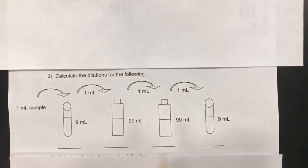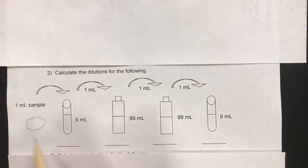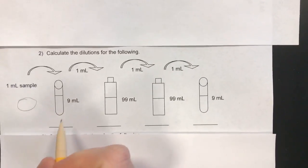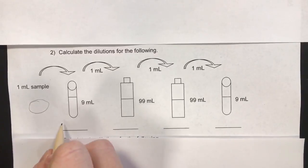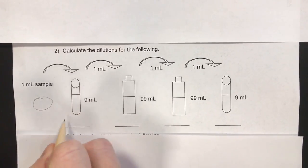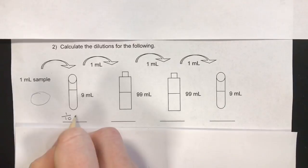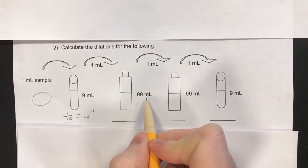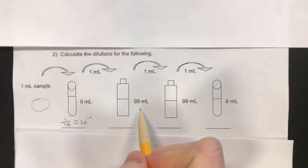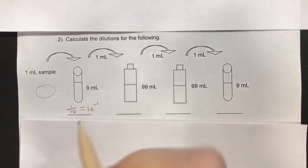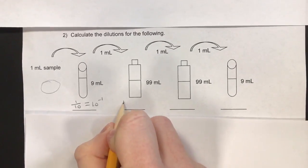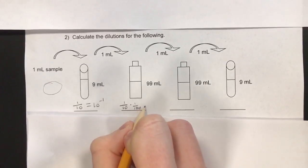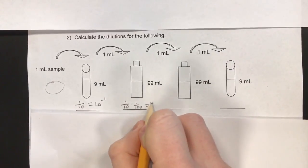Same thing with this example — you're going to have the original sample and you're going to put 1 milliliter each time into the next test tube. Just as in the first example, we're going to have 1 and 9 equaling 10, so it's going to be 1 over 10, which equals 10 to the negative 1. For the next one we're going to have 99, so it's 1 plus 99 equaling 100. Don't forget to put the original dilution from the first one in there as well — so 1 over 10 times 1 over 100 equals 10 to the negative 3.